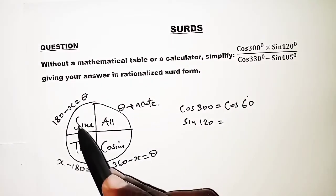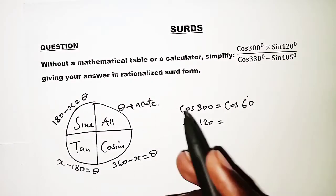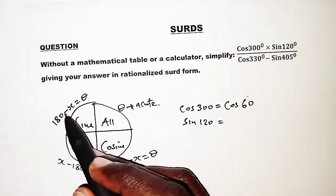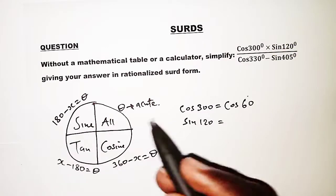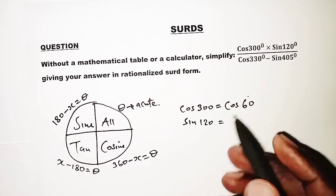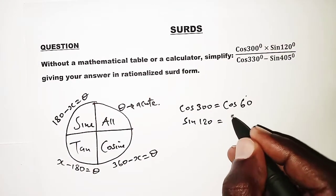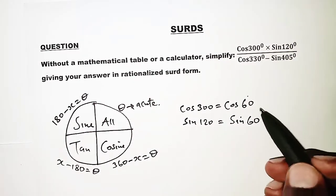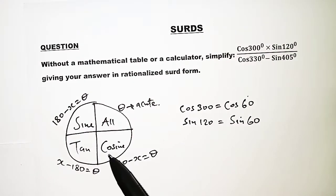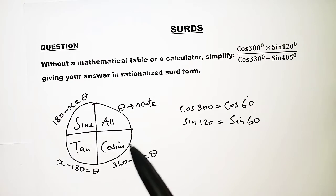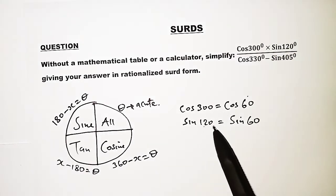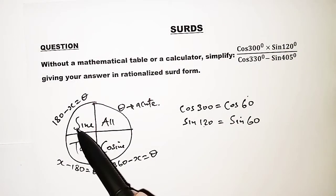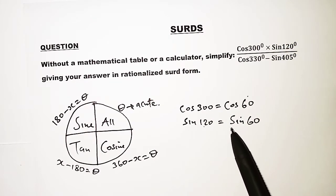Next we have sine of 120. Since 120 lies in the second quadrant, we use 180 minus 120, giving us sine of 60. In the second quadrant, sine is positive, so we get positive sine 60.